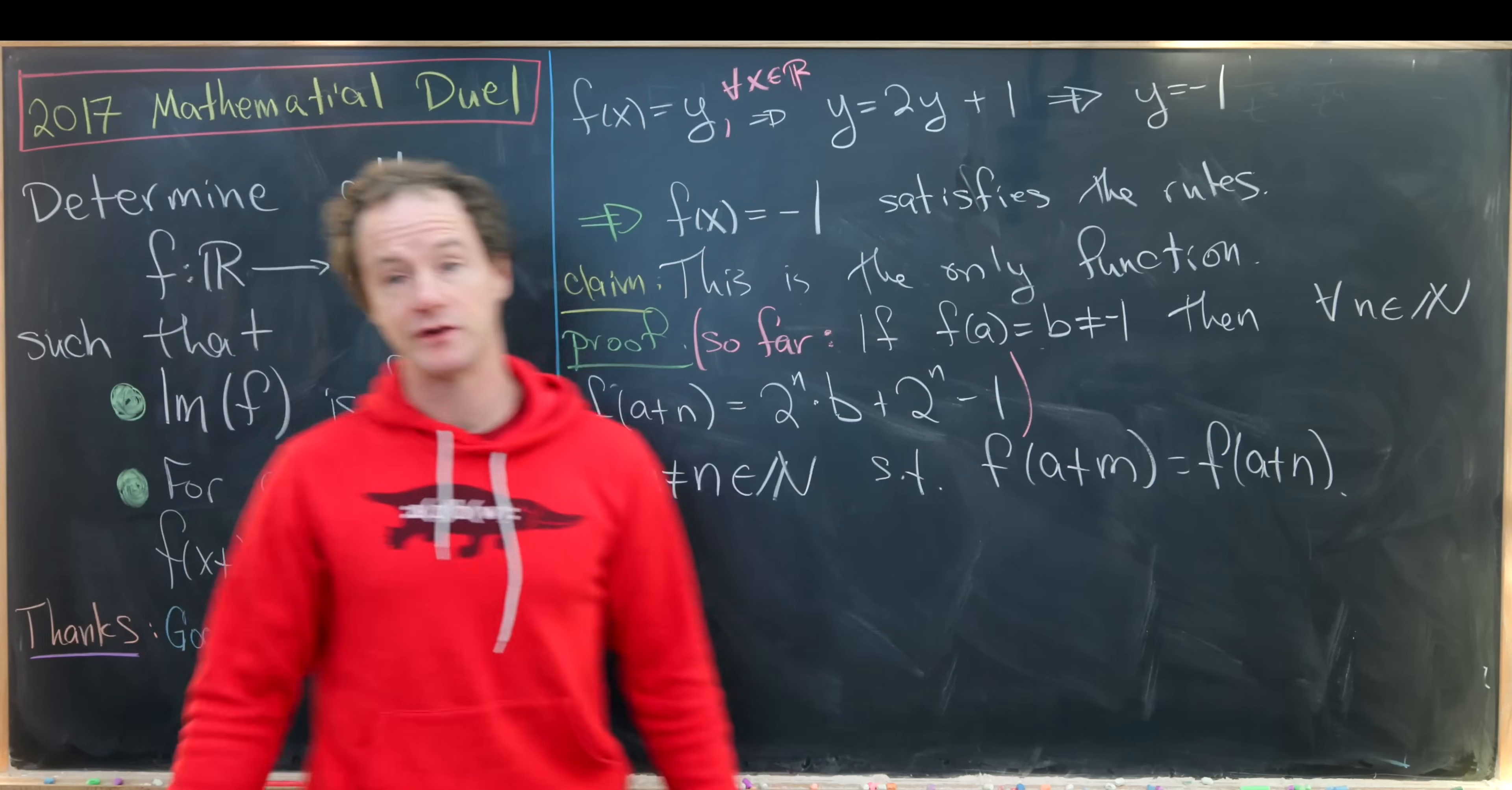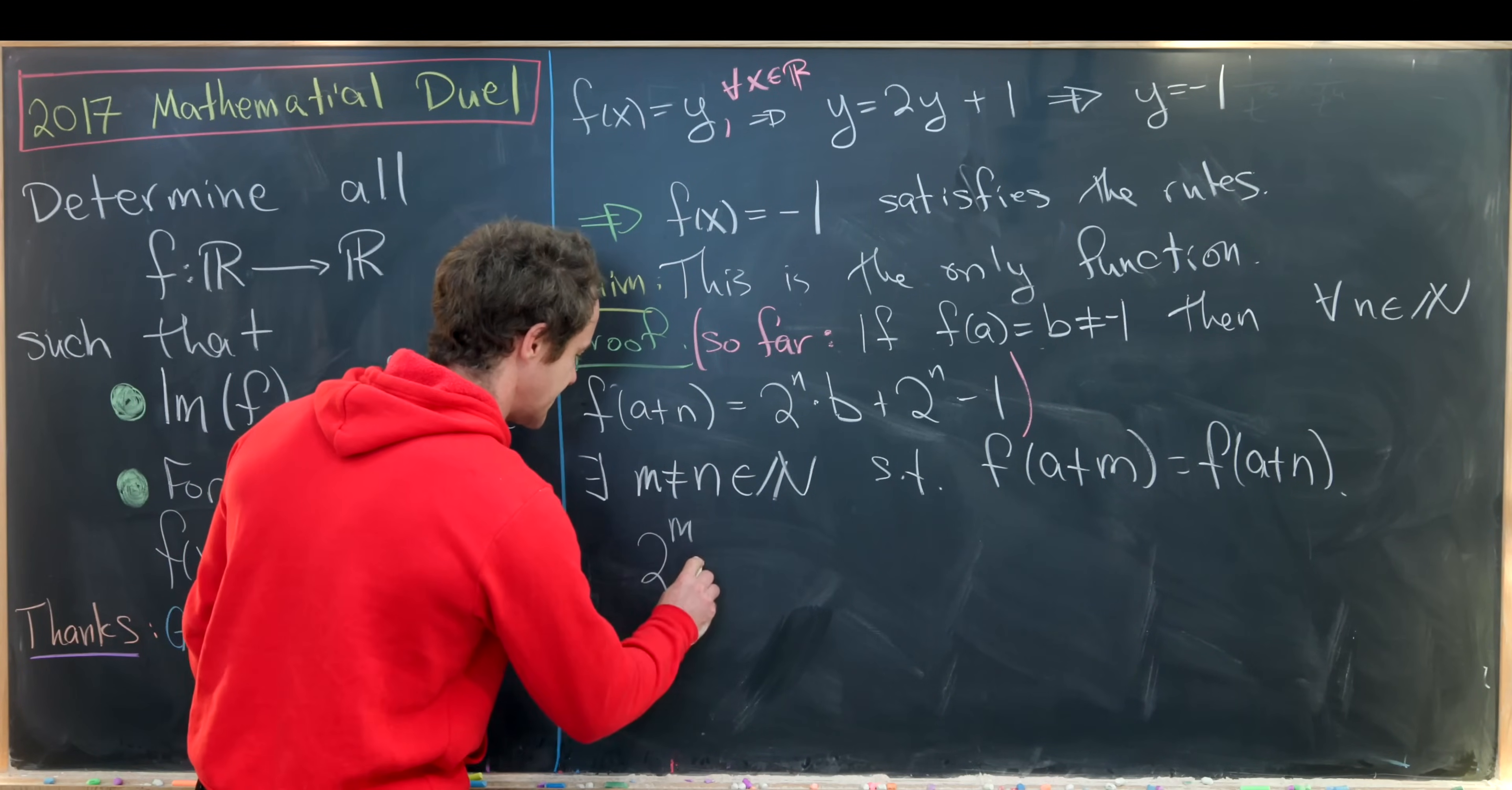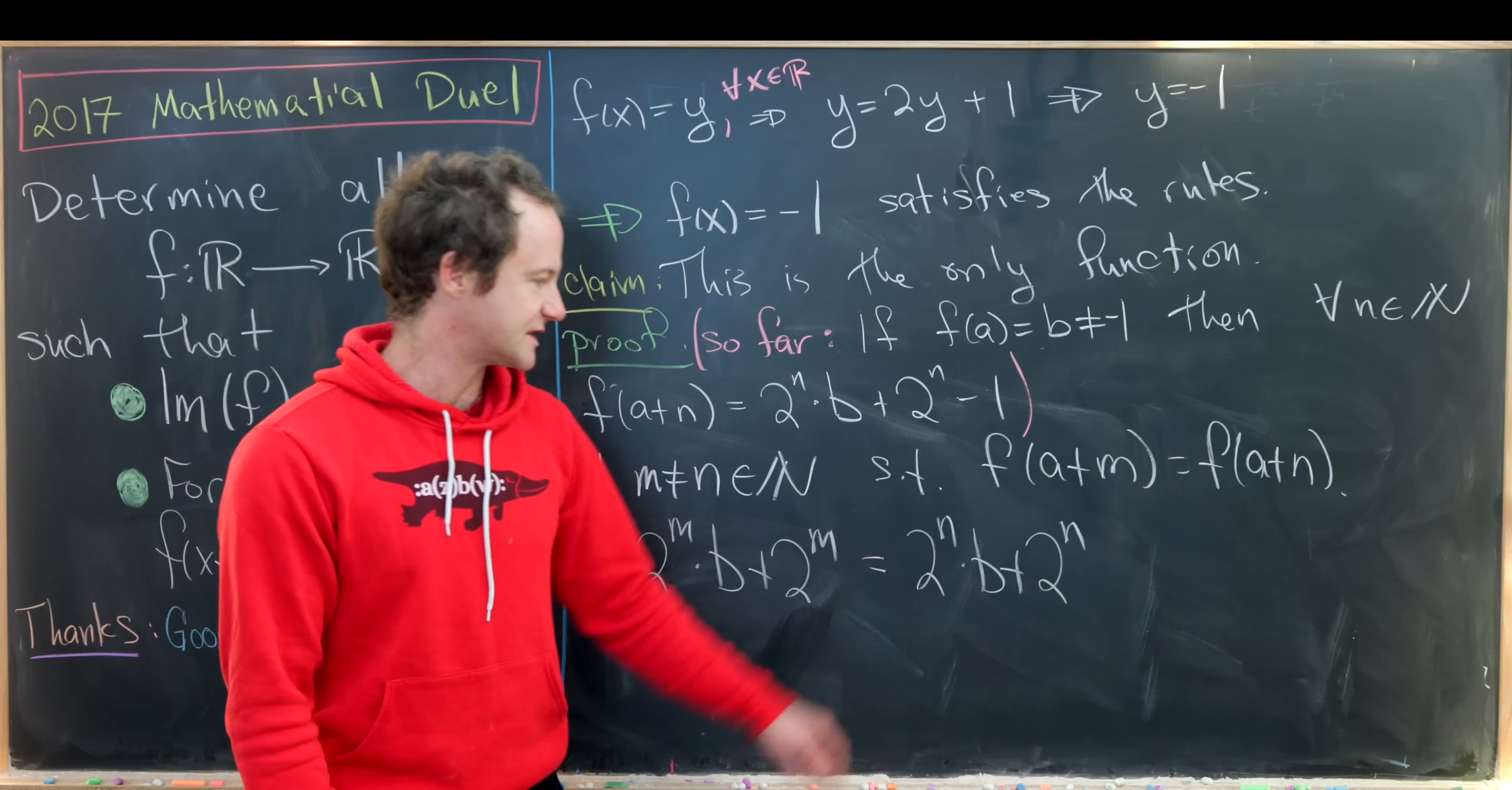infinitely many different values. But that's one of the assumptions that we're making is that it does not take on infinitely many values. Okay, so now let's apply this rule and see that we get 2^m times b plus 2^m